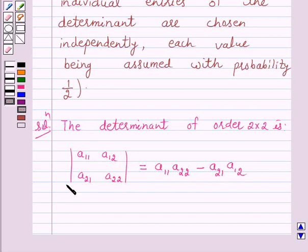Now each element of this determinant is either 0 or 1. The number of determinants